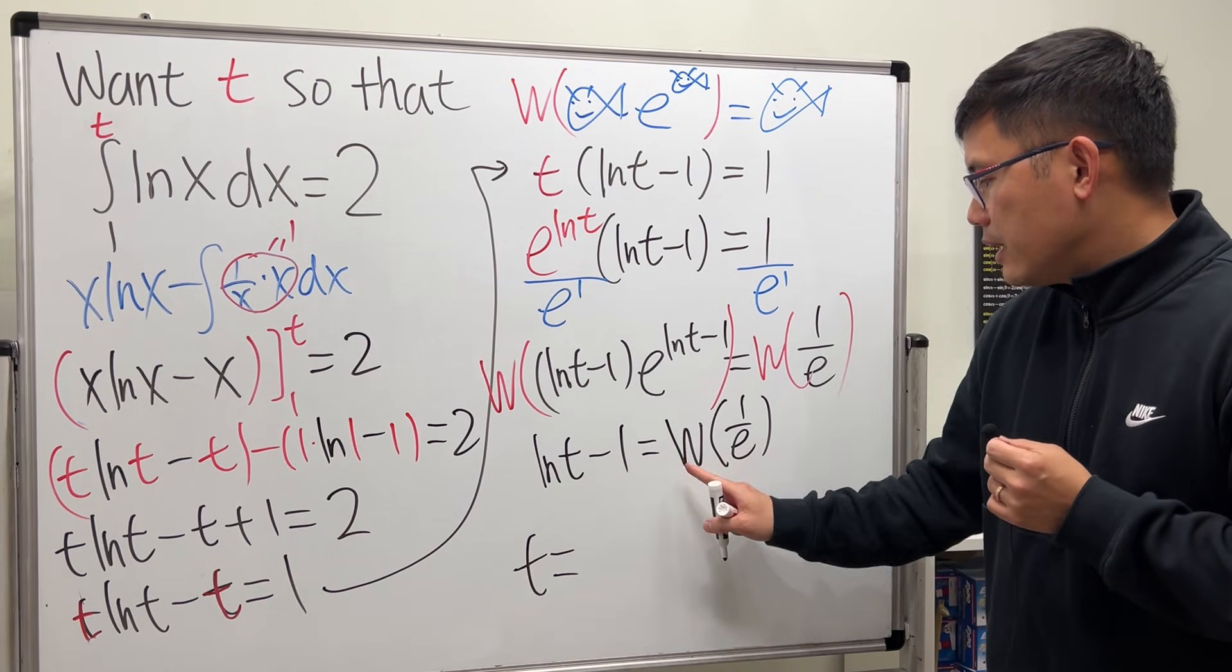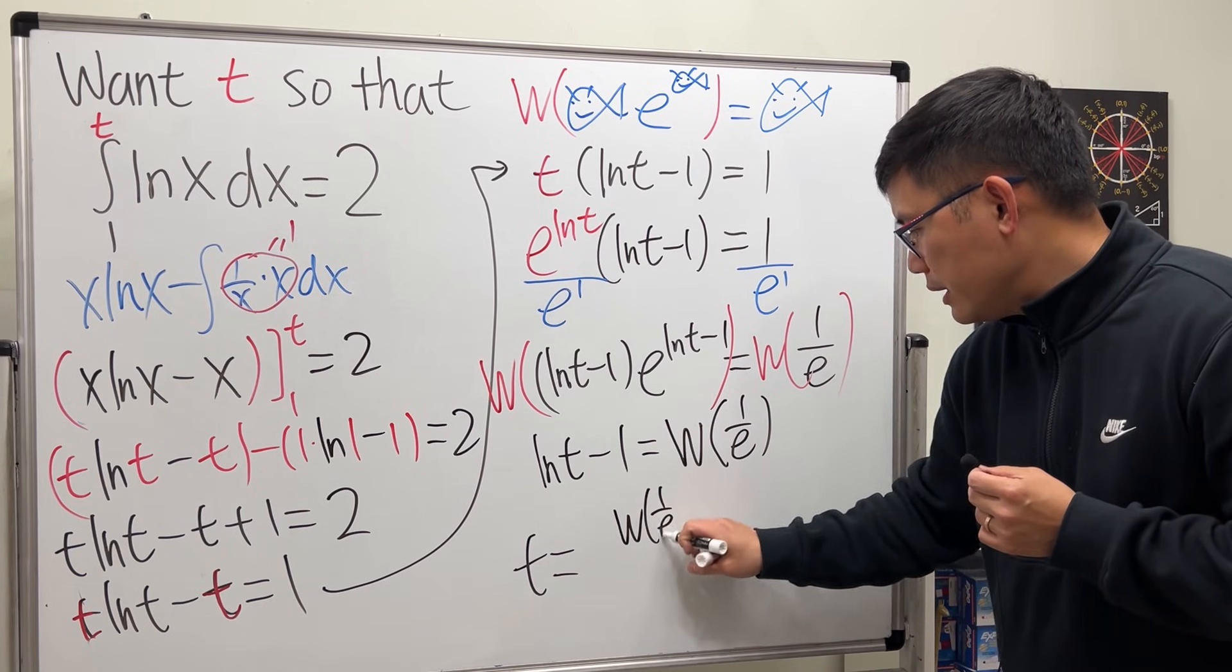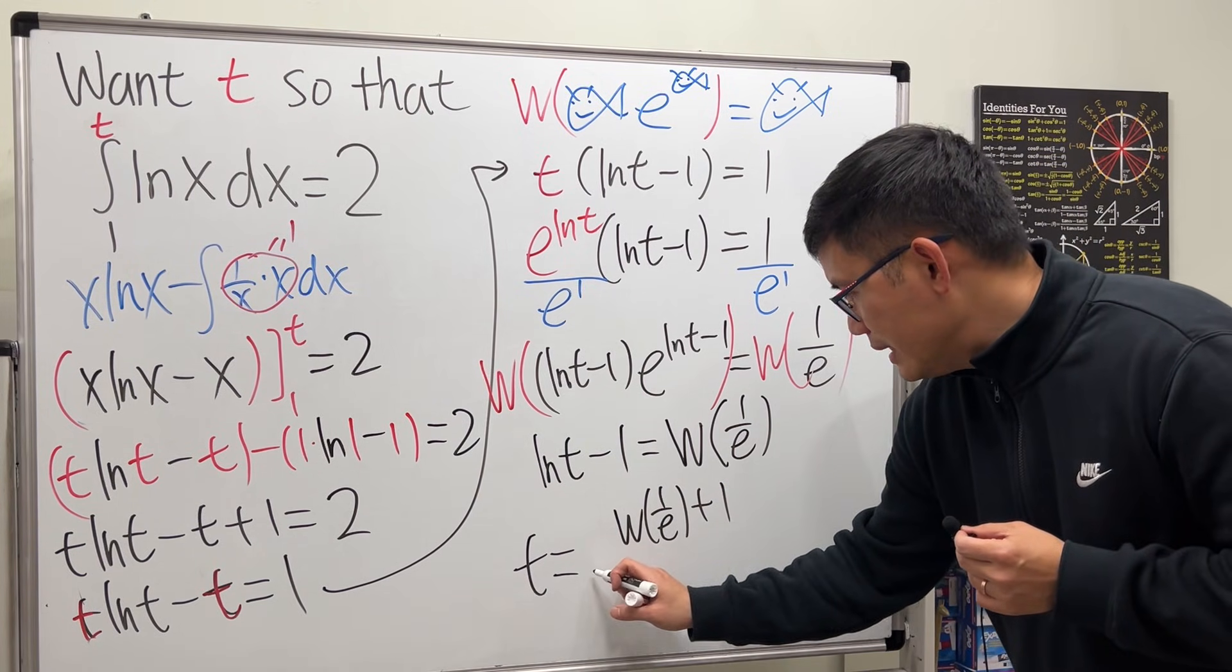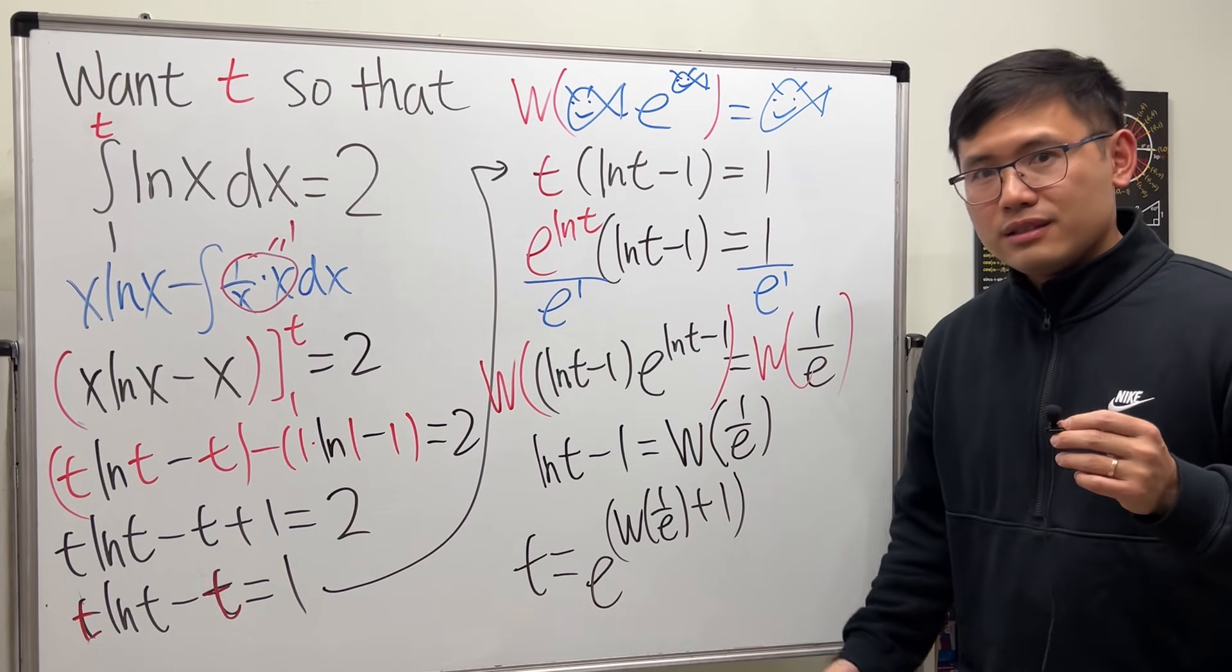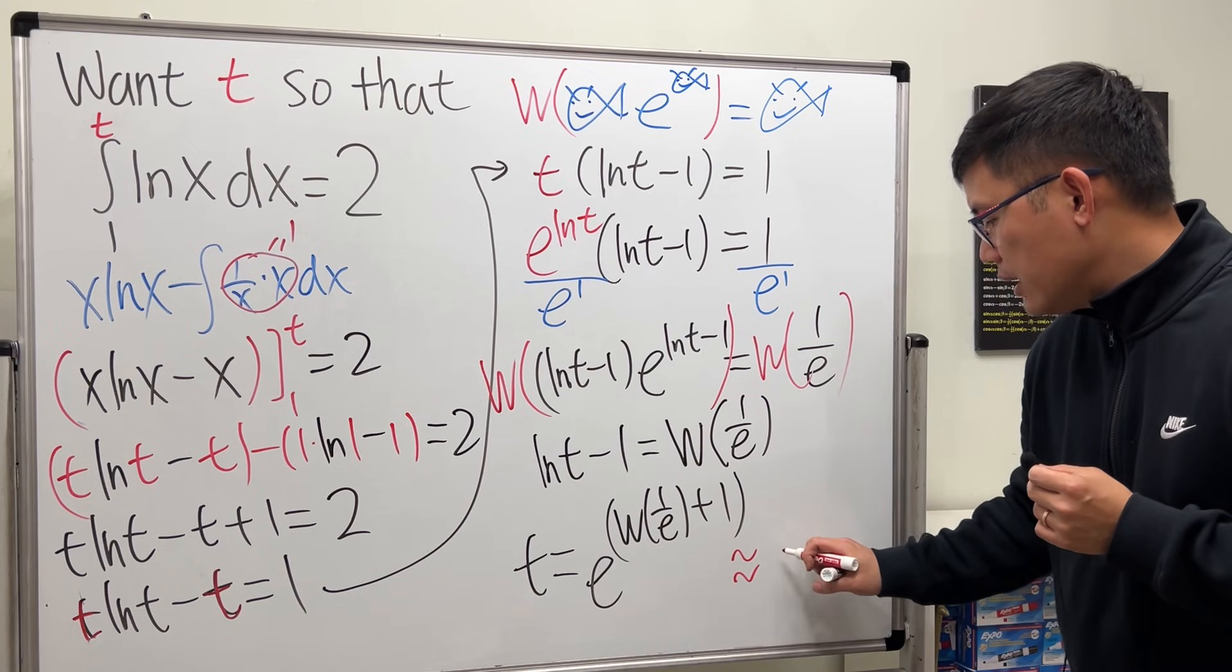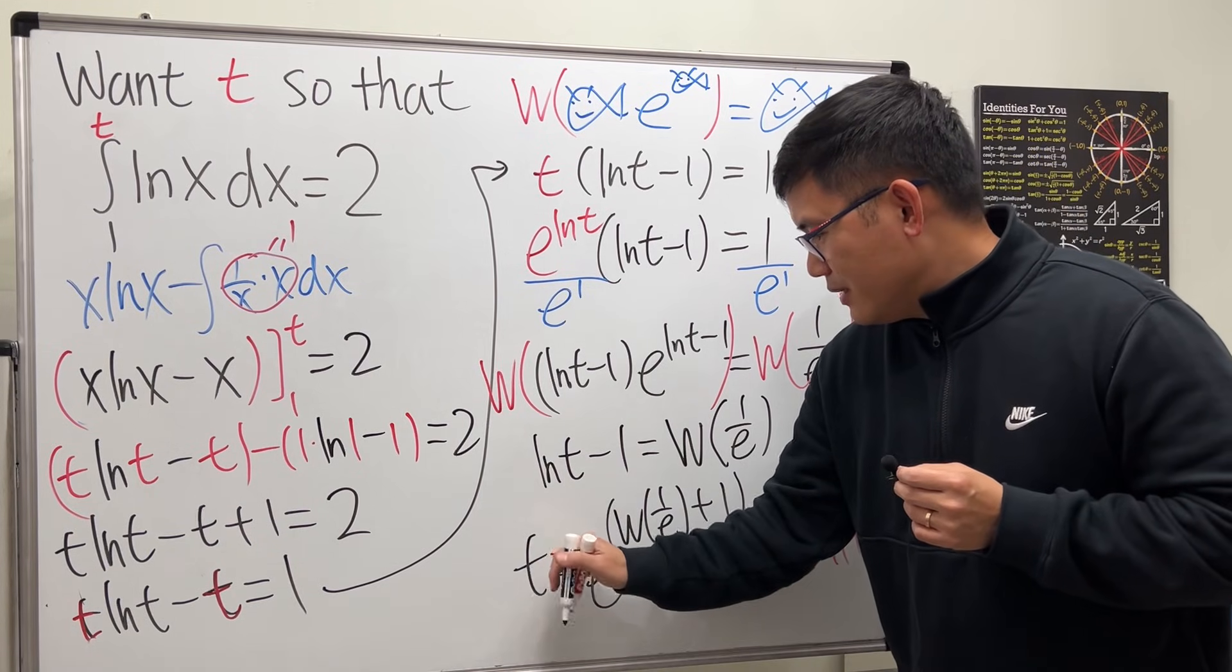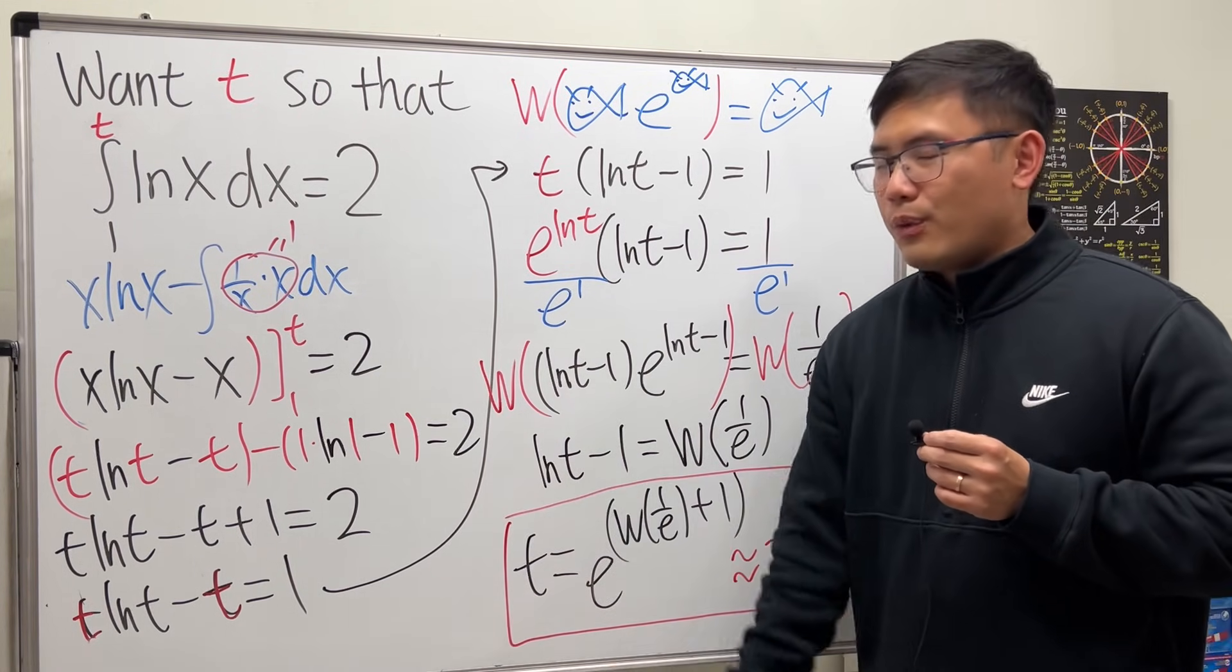So we get t equals, we will have W of 1 over e and then plus 1, and then to get rid of the ln we e to the power, so we just do e to this power like that. Yes, that will do it. And of course I'll tell you guys the approximation for this is about 3.59112. So this is the t value that will make it work.